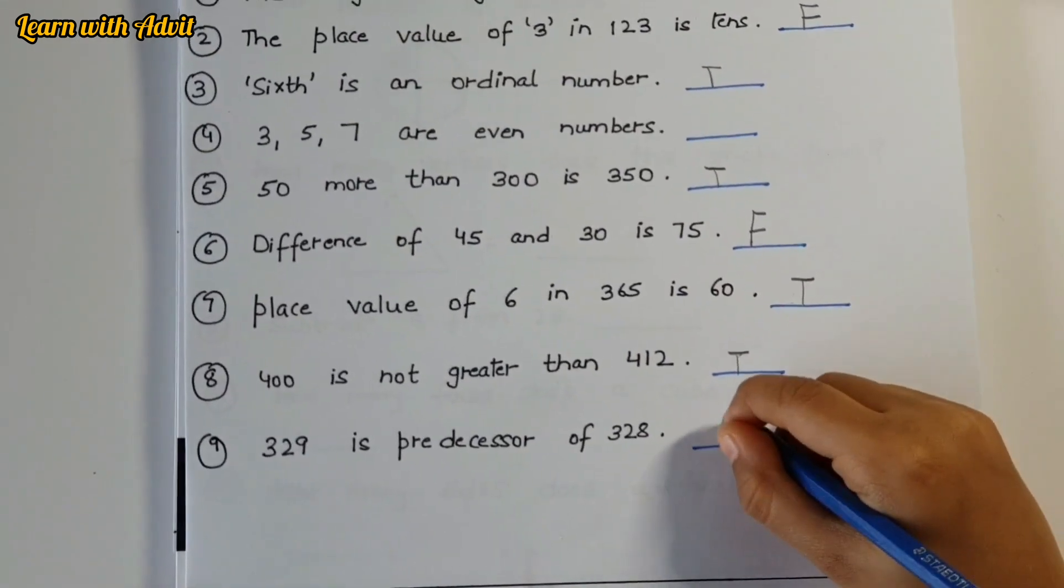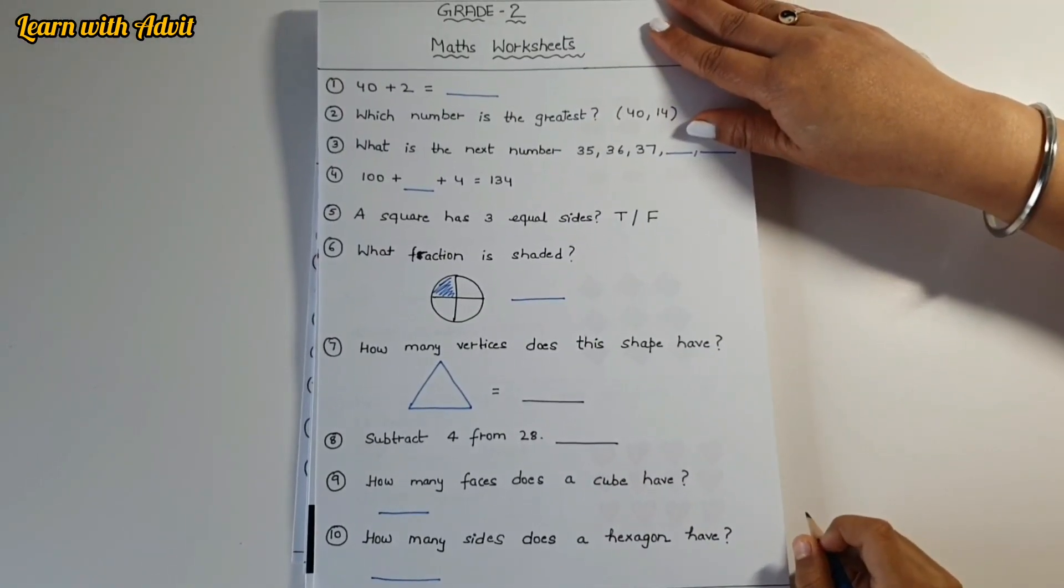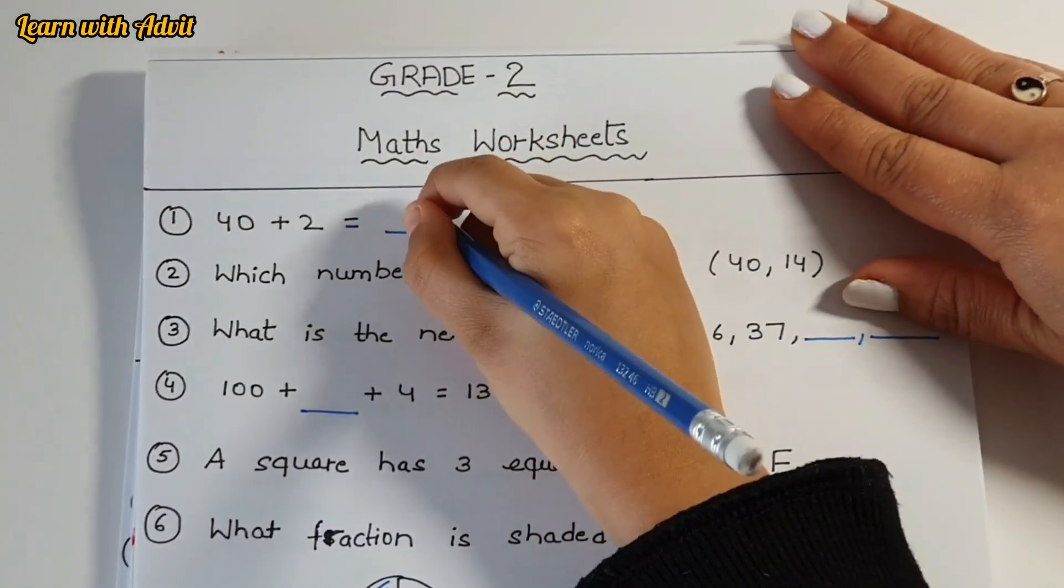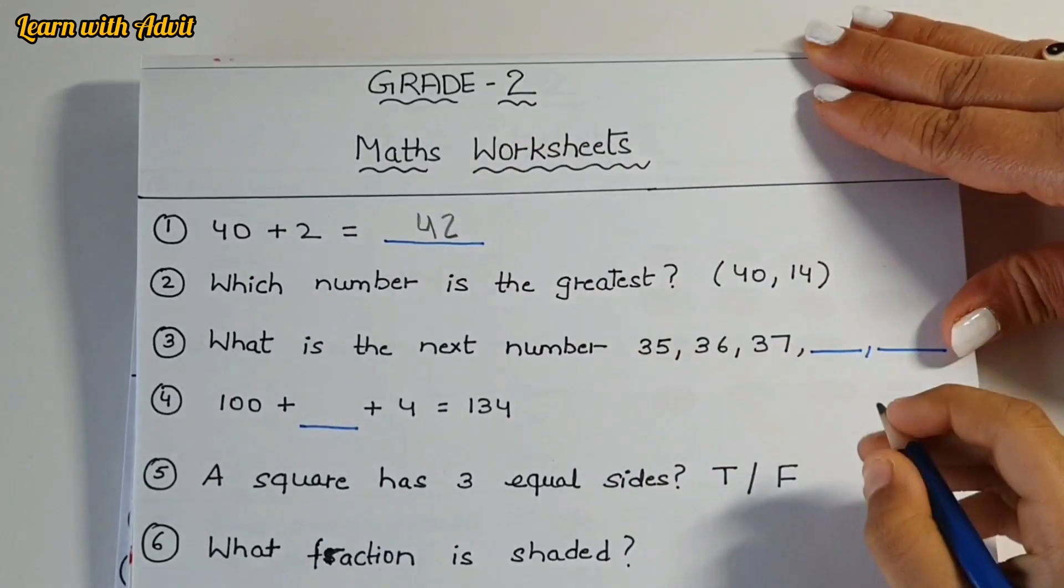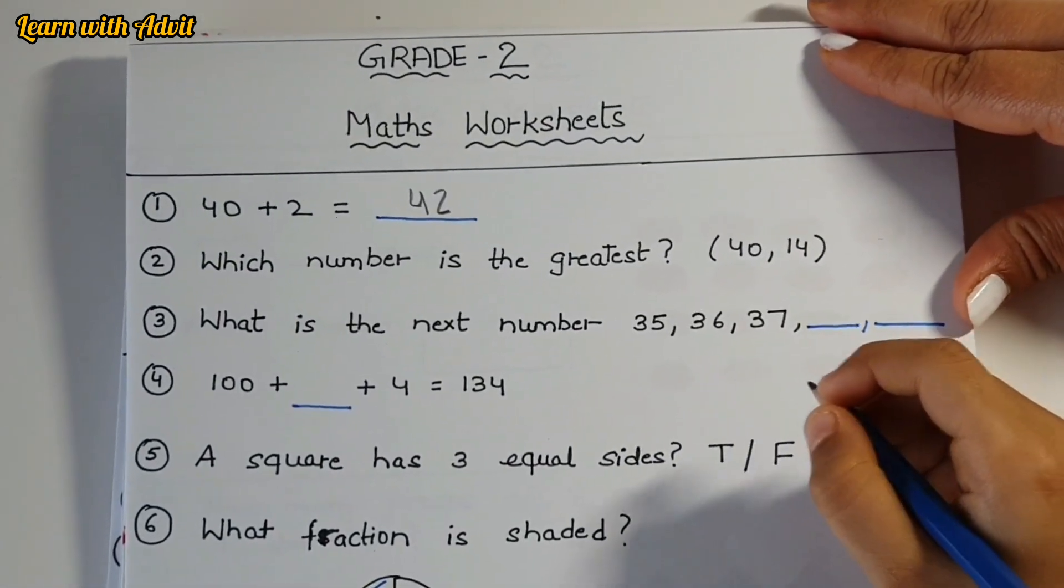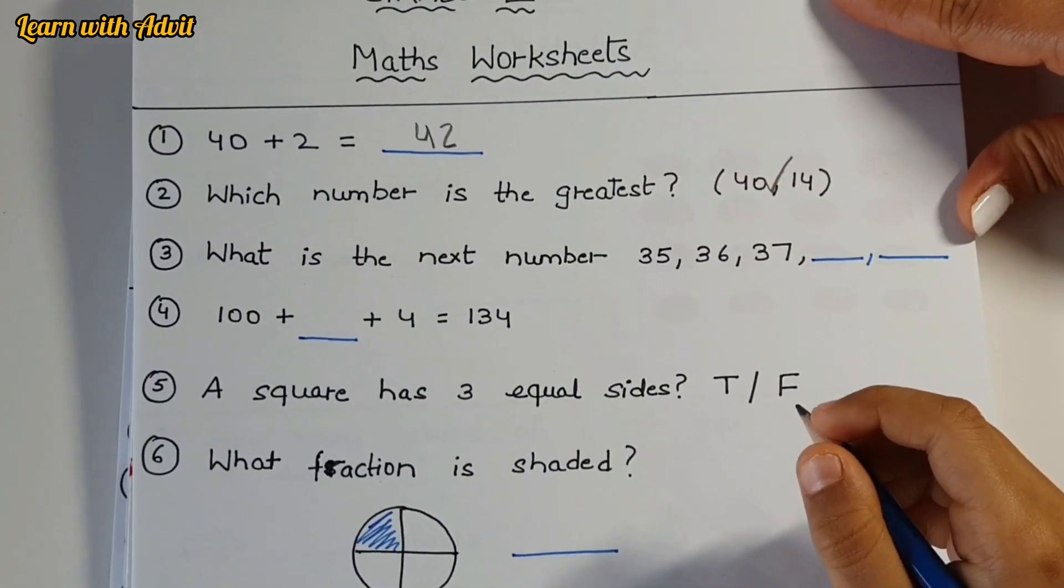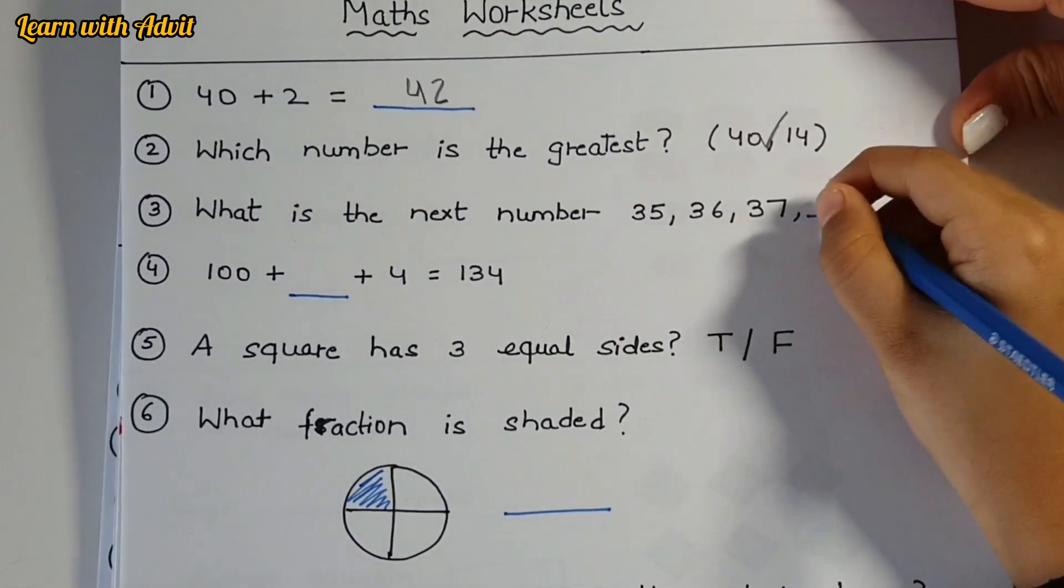329 is the predecessor of 328 - no. So here are mental math questions. 40 plus 2 is - you have to solve it very quickly. Very good. Which number is the greatest, 40 or 14? What is the next number: 35, 36? That is - and it's so easy.